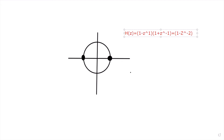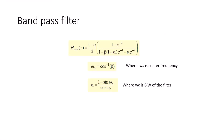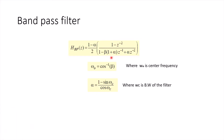Going back to the slides: the transfer function of the IIR band pass filter has the same numerator as the FIR band pass filter — we need two zeros, one at z = 1 and one at z = -1. The denominator is: (1 + alpha)/2 × (1 - beta(1 + alpha)z⁻¹ + alpha·z⁻²), which defines the poles and zeros location.